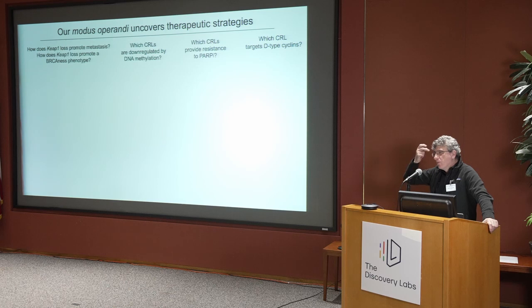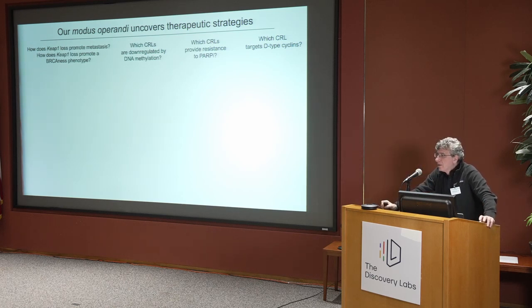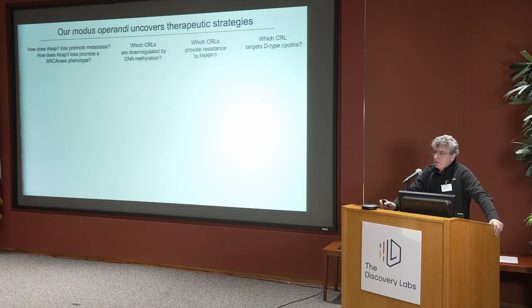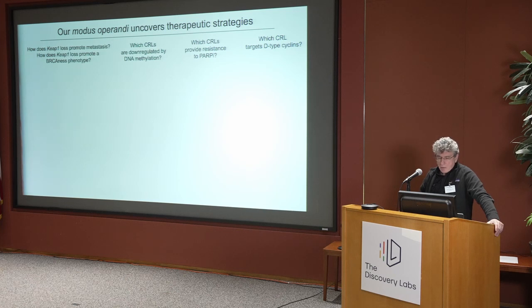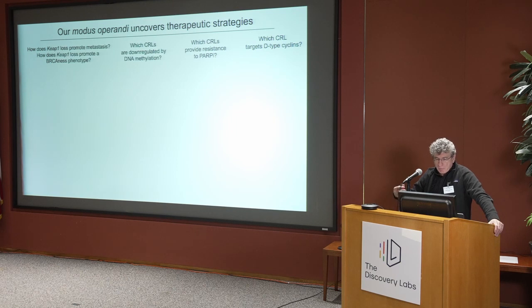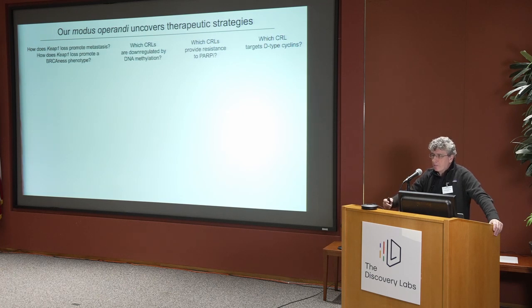I'll give you some examples of recent questions that postdocs in the lab have asked. KIP1 is a ubiquitin ligase — actually a substrate receptor of a CRL3 — and is lost in lung cancers. When it's lost, it promotes metastasis, but how? Nobody knew about that. Moreover, when KIP1 is lost, it promotes a BRCAness phenotype — it mimics a sort of DNA damage repair defect — and by which mechanism was not known.